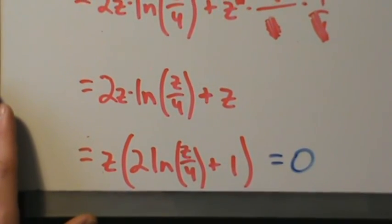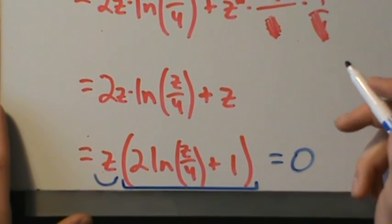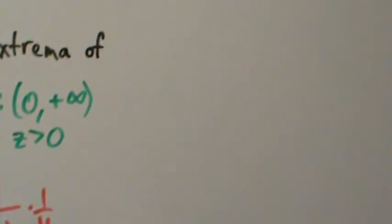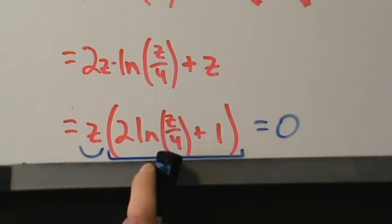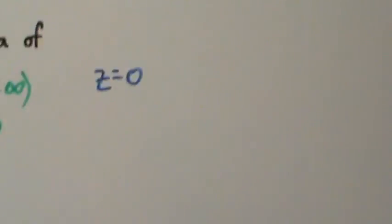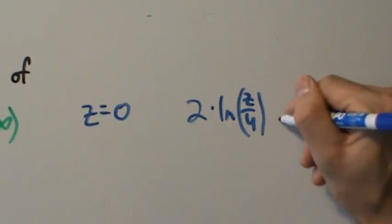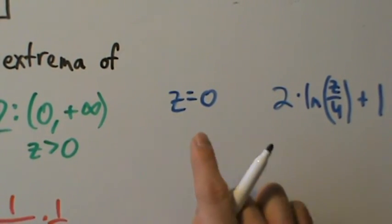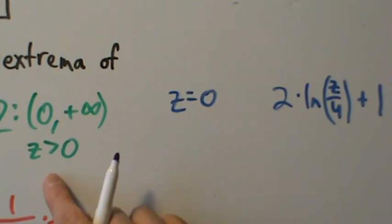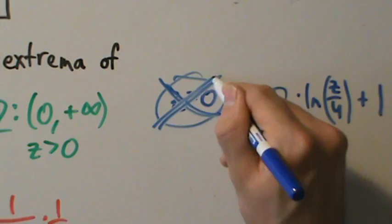Now we just want to know when the derivative equals 0. We either have z equals 0 or the other factor equal to 0: 2 natural log of z over 4 plus 1 equals 0. Z equals 0 is not a critical point because it's not in the domain — z has to be strictly greater than 0. So we just toss it out.